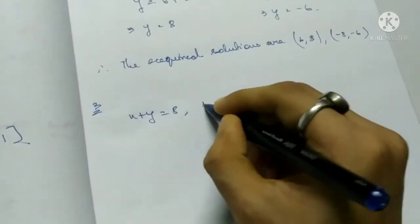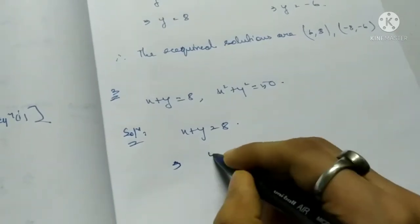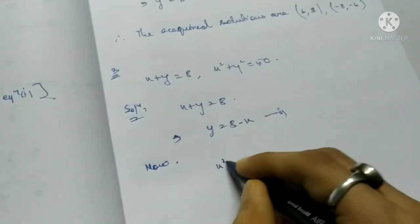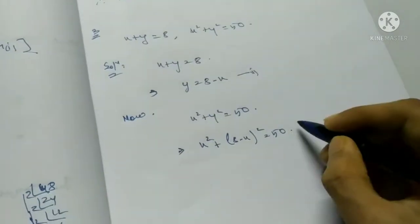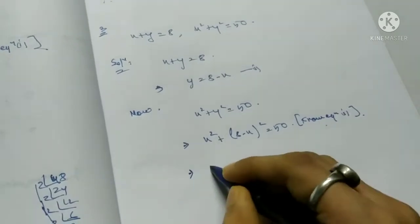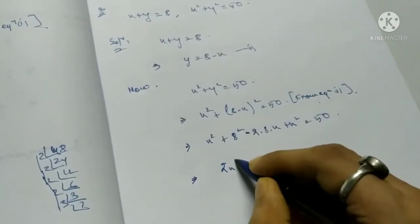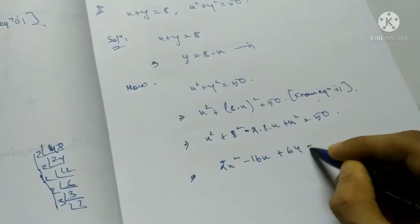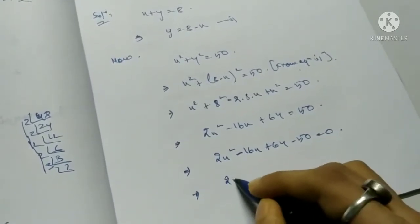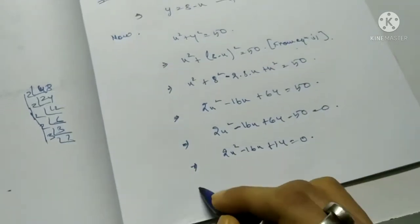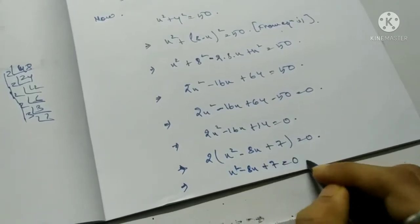Question number 3: x plus y equals 8 and x squared plus y squared equals 50. From equation 1: y equals 8 minus x. Substituting: x squared plus (8 minus x)² equals 50, giving x squared plus 64 minus 16x plus x squared equals 50, so 2x squared minus 16x plus 64 equals 50. Simplifying: 2x squared minus 16x plus 14 equals 0, then x squared minus 8x plus 7 equals 0.